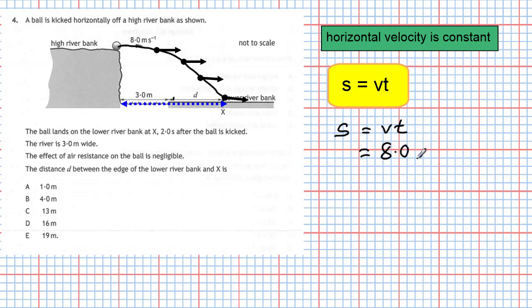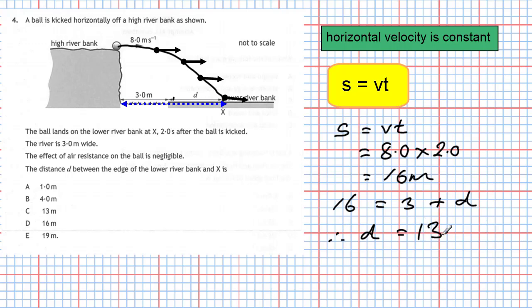Eight meters per second multiplied by two seconds gives us a total distance of 16 meters. So the horizontal distance traveled by the ball is 16 meters. That 16 meters must be made up of three meters plus the distance d, so therefore the distance d has to be equal to 13 meters.